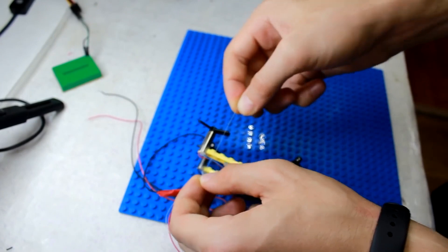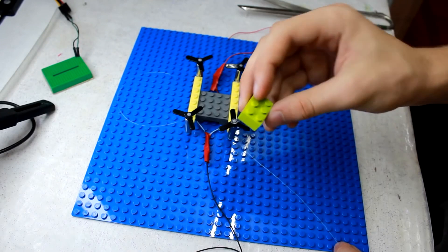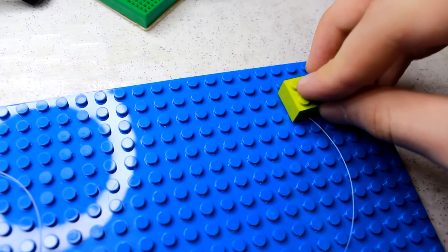After tying it to the corners of the drone base, I secure the free ends to a LEGO plate using bricks. It's convenient because if something happens, I can adjust everything at any moment.